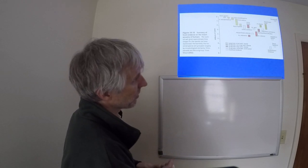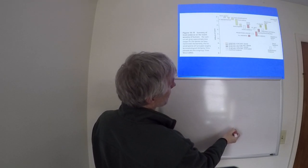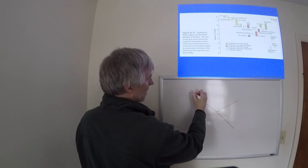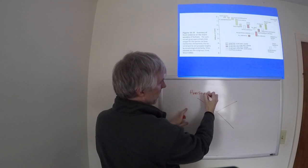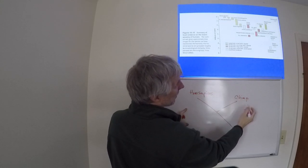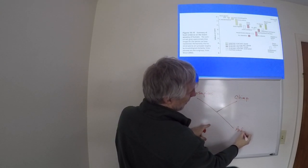So if you kind of squint your eyes, you can kind of see a tree that looks a little bit like this. This is Homo sapiens, this is the modern-day chimp, and this is Ardipithecus.